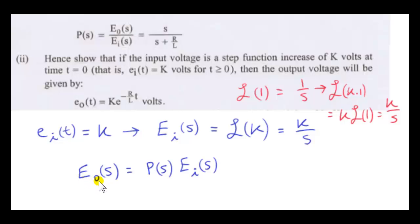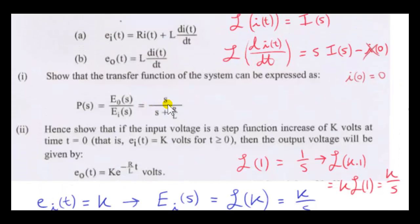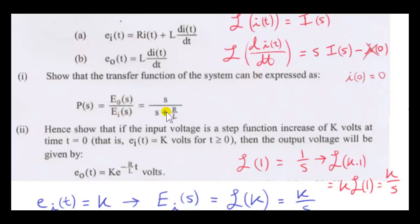Now we can get big E sub O of S by cross-multiplying. The transfer function does not depend on what the input or output voltages look like — it only depends on R and L, the resistance and inductance of the circuit. So we can always use the transfer function: if we have one of the two, we can get the other, since their ratio is always S over S plus R over L.